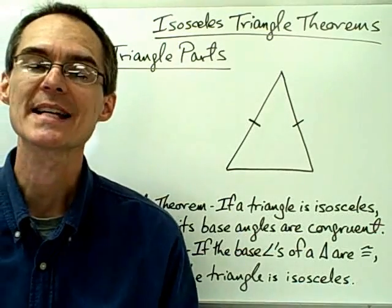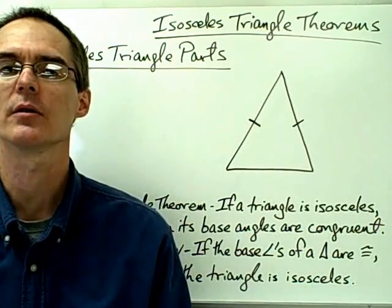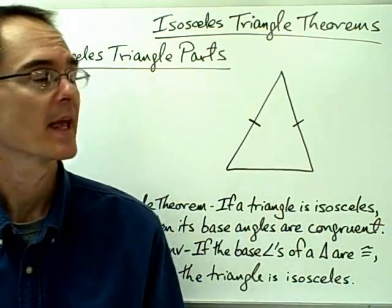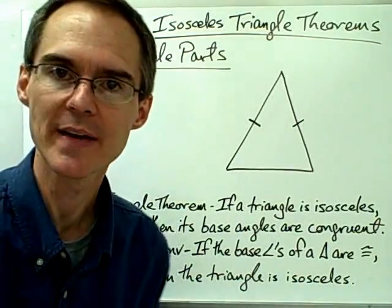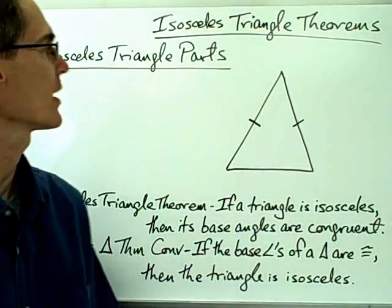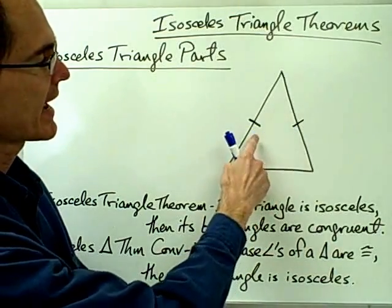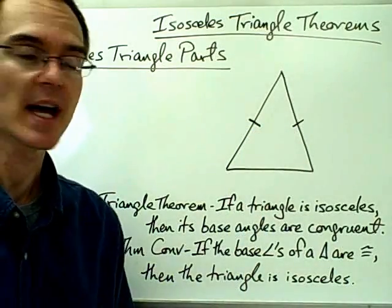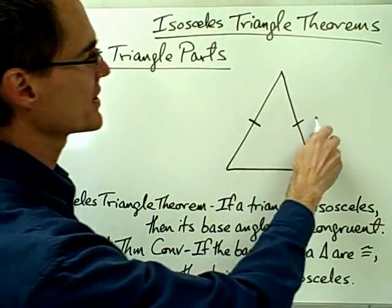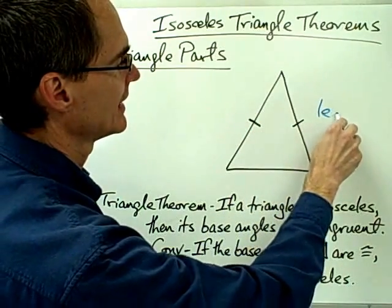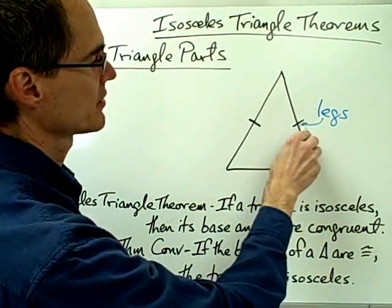This video is on isosceles triangles and the isosceles triangle theorems. Before we get to those theorems we're going to talk about the parts of an isosceles triangle. An isosceles triangle is a triangle that has at least two congruent sides, and those two congruent sides are called the legs of the isosceles triangle.